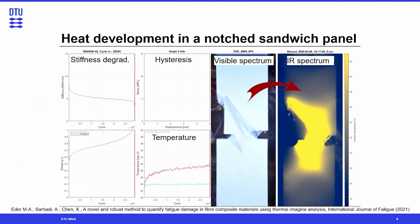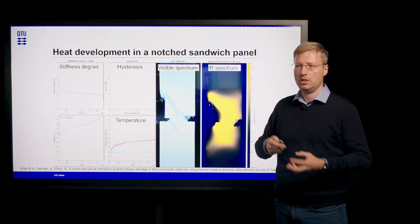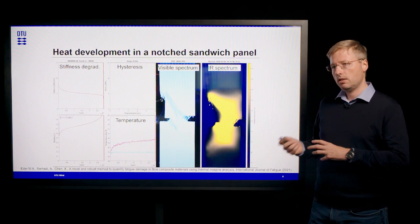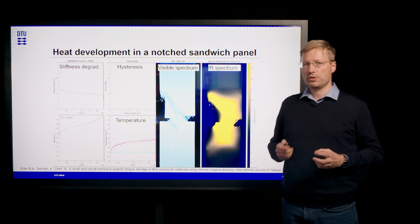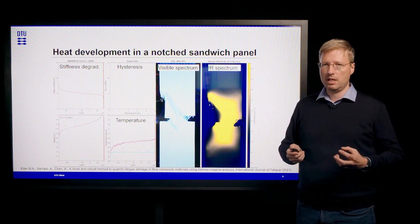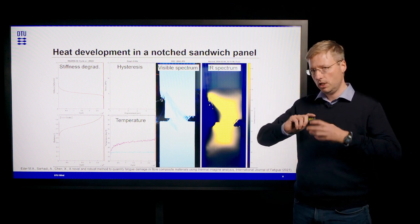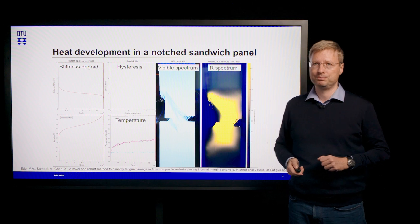If we look at the infrared spectrum taken by an infrared camera, we can see that fatigue damage is closely associated with heat generation. This heat comes from the transformation of mechanical energy into heat, which shows once more that fatigue damage and thermodynamics are really closely interlinked.